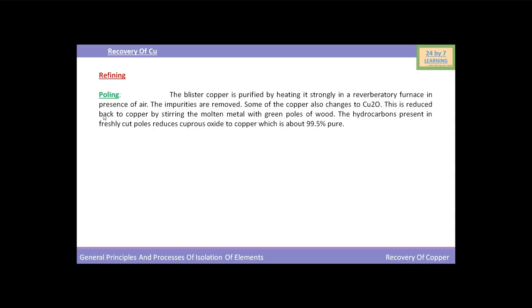The next step is the refining of copper. Blister copper is purified by using the following methods. First, we are going to discuss pooling. The blister copper is purified by heating it strongly in a reverberatory furnace in presence of air, and the impurities are removed.